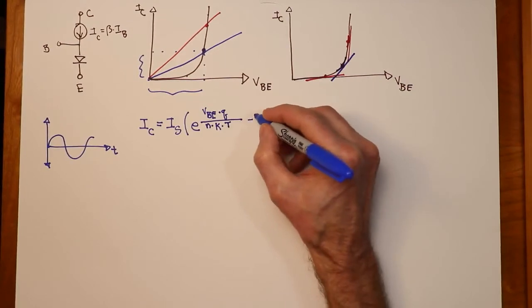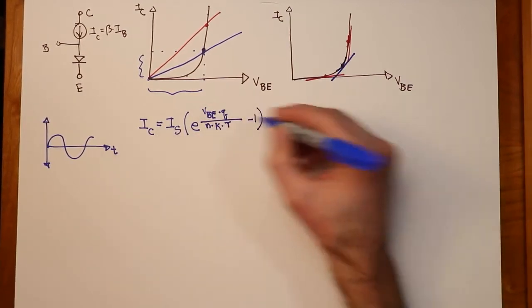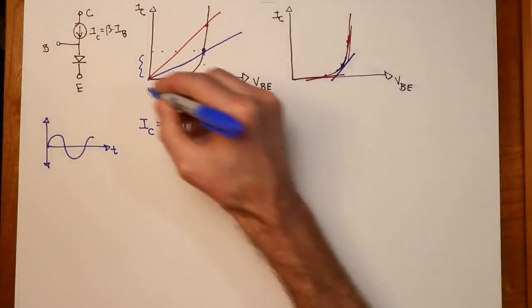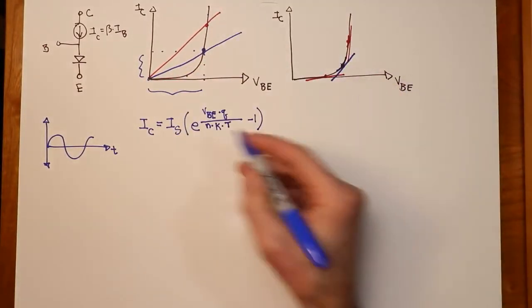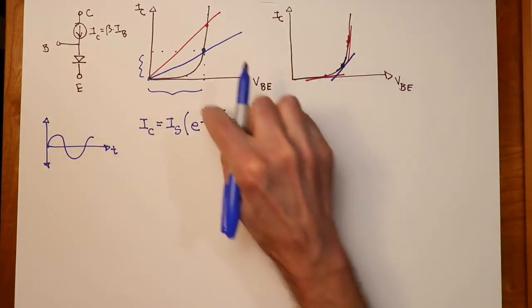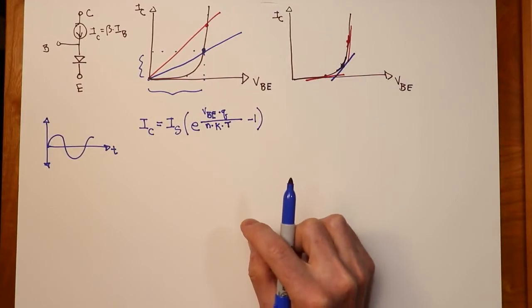You take that, minus 1, and that's essentially the equation for that curve right there. So what we would have to do is take the first derivative of this equation after having plugged in all of the appropriate values for this thing.